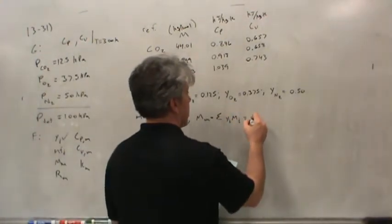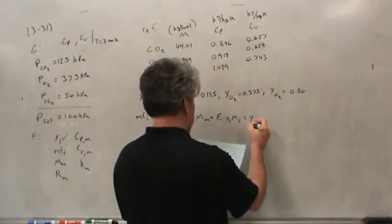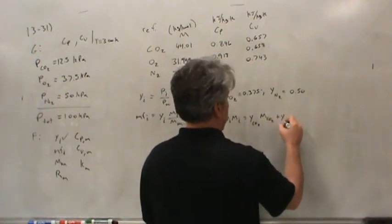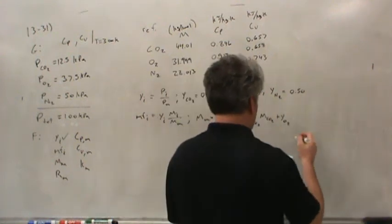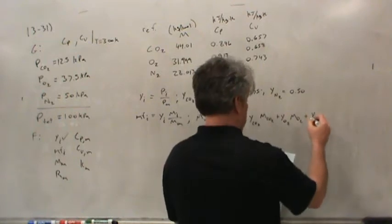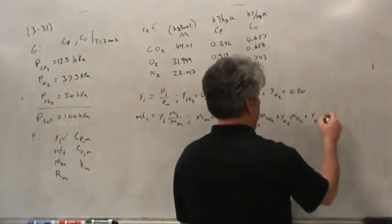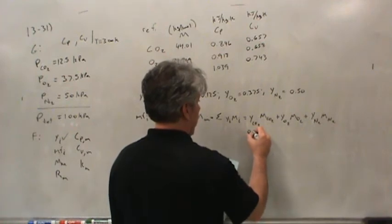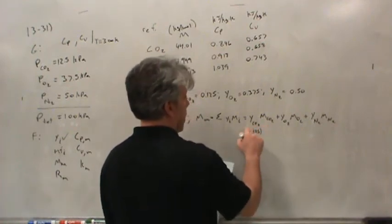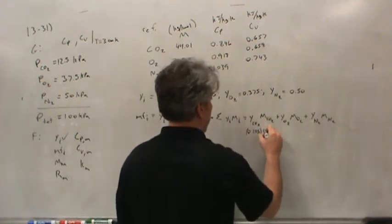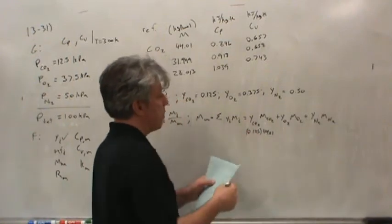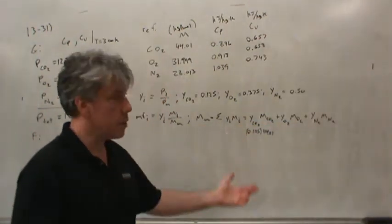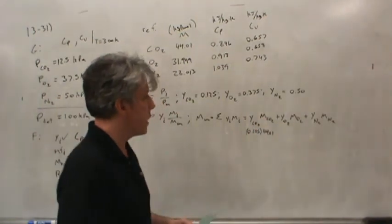The molecular weight of the mixture is just a weighted average of the molecular weights of the individual species. I take the mole fraction of CO2 times its molecular weight, plus the mole fraction of O2 times its molecular weight, plus the mole fraction of N2 times its molecular weight. Plugging in: 0.125 × 44.01 plus 0.375 × 31.999 plus 0.50 × 28.013.